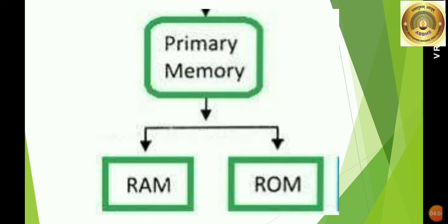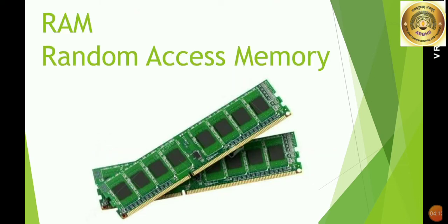Primary memory has RAM and ROM. The full form of RAM is Random Access Memory. This chip that I was talking about is called RAM. RAM is a temporary memory of the computer. The information on RAM can be lost when you switch off the computer. If you are typing something and didn't save that file, your information will be lost when you switch off the computer.